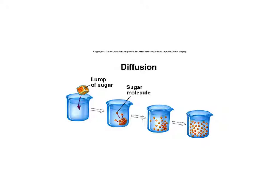We're looking at a high concentration of sugar — a lump of sugar — being placed into water, which has no sugar at all. So here's your high and here's your low. As the lump of sugar settles to the bottom, the sugar molecules start to move towards the low side. The sugar molecules diffuse throughout the entire solution, moving into every corner until every corner is of equal concentration.